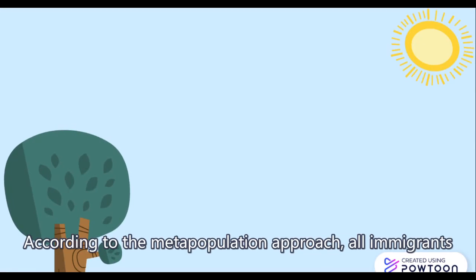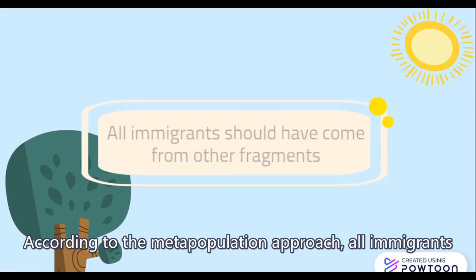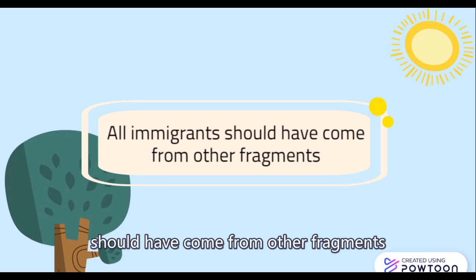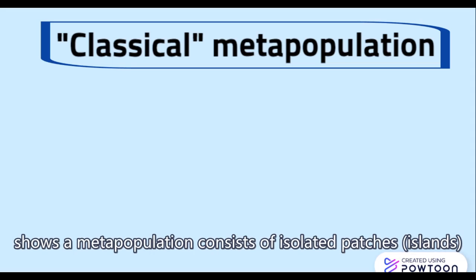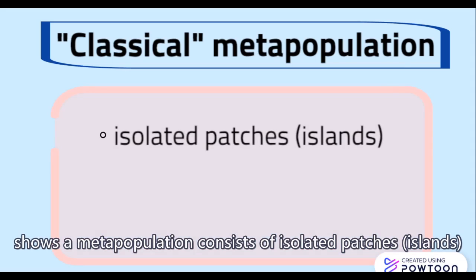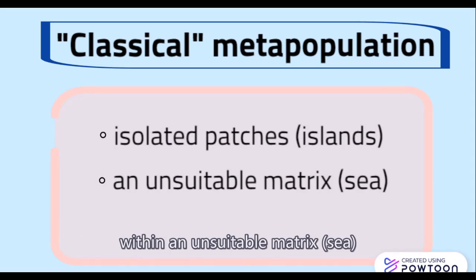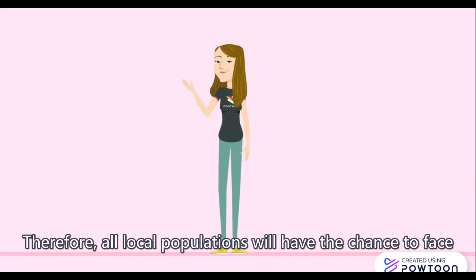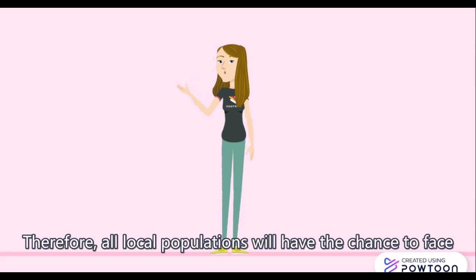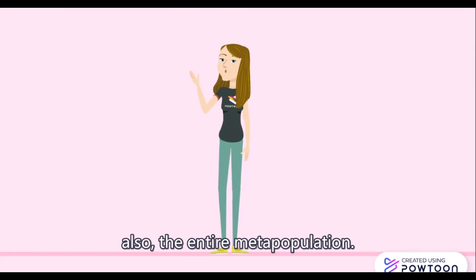According to the metapopulation approach, all immigrants should have come from other fragments. According to Levin's 1969, the classical form of metapopulation shows a metapopulation consists of isolated patches within an unsuitable matrix without a mainland. Therefore, all local populations will have the chance to face extinction, as well as the entire metapopulation.